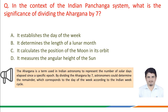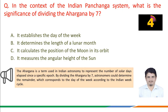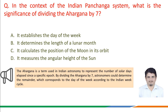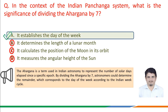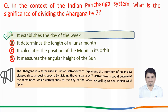The Ahargana is a term used in Indian astronomy to represent the number of solar days elapsed since a specific epoch. By dividing the Ahargana by 7, astronomers could determine the remainder, which corresponds to the day of the week according to the Indian week cycle. Therefore, the correct answer is option a: dividing the Ahargana by 7 establishes the day of the week.